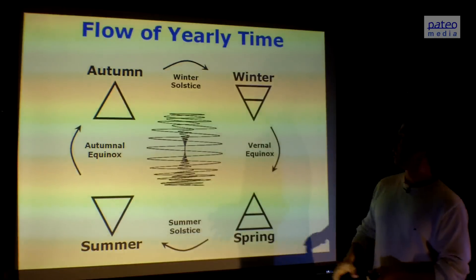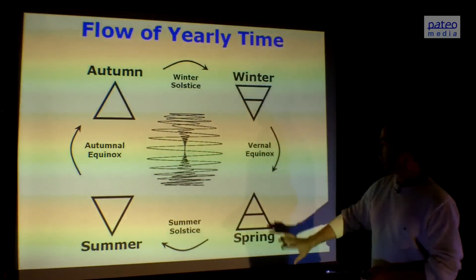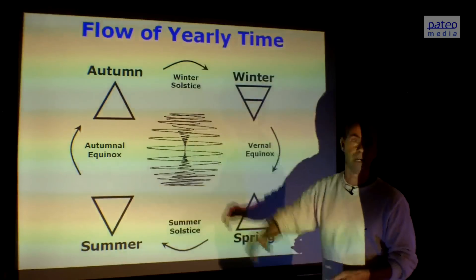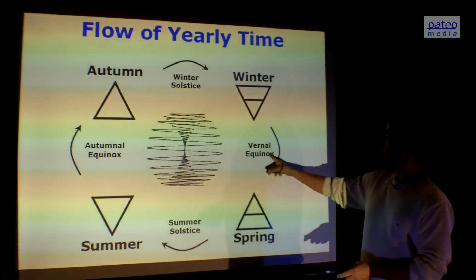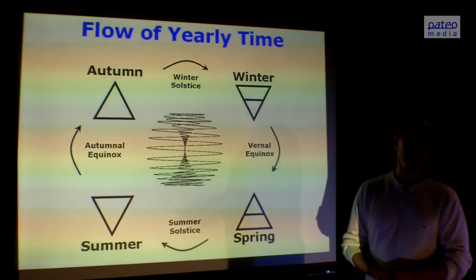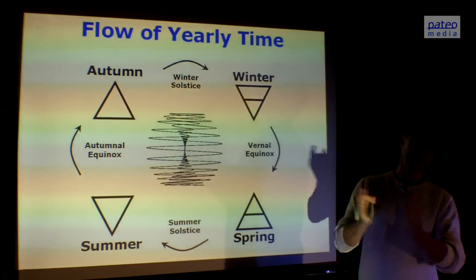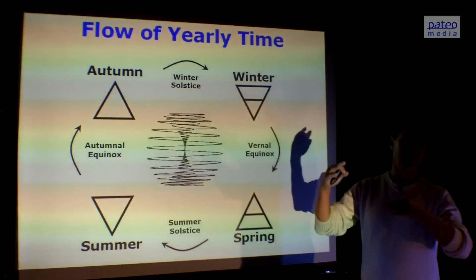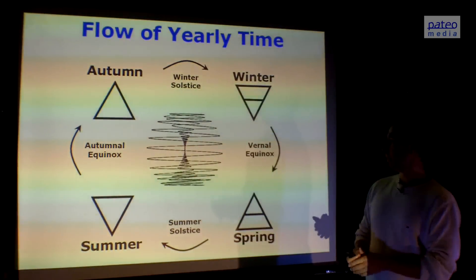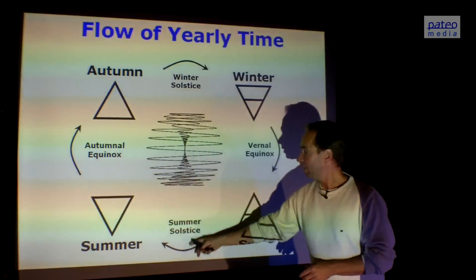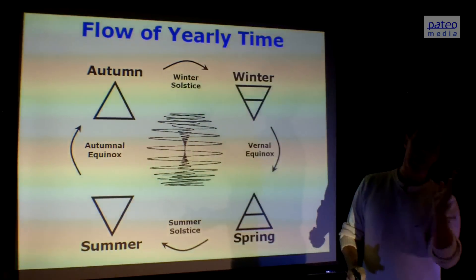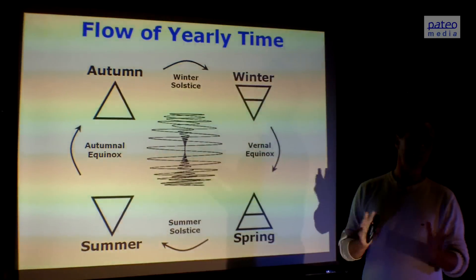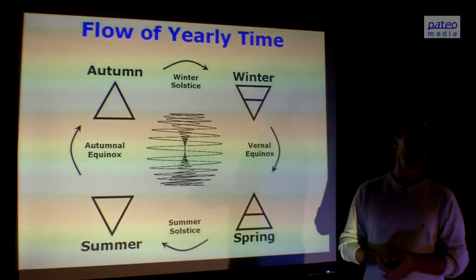Again we see the four phases: winter representing earth energy, spring air energy, water with summer, and fire with autumn. At the equinoxes, the amount of daylight and night time is exactly the same — light and darkness are exactly the same strength. At the solstices, the dynamics is shifting, and at both solstices the dynamics of light and darkness is not changing for about three days.